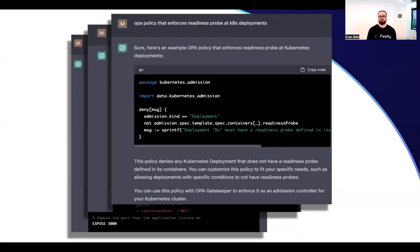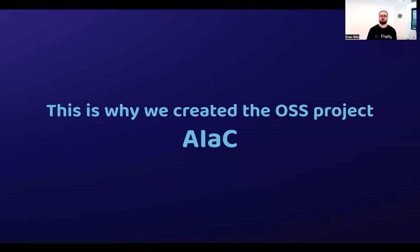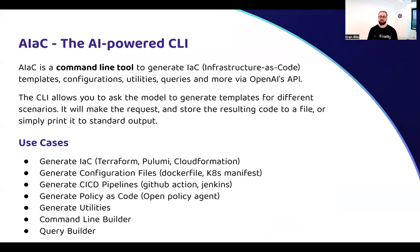ChatGPT is an amazing tool — it can generate code, manifests, scripts, whatever you are asking for. But then you need to copy and paste it, and it's not that convenient to work with a browser-based solution. This is exactly why we introduced an open-source project called AIIC. AIIC is a CLI — you can install it locally on your Mac or remotely on a Linux VM. You can prompt the AI and get responses saved directly to your local disk. It's very convenient, and you can build automation flows around it since everything is done via command line.